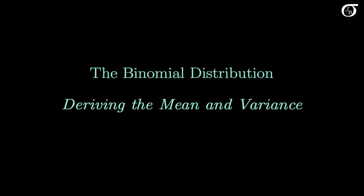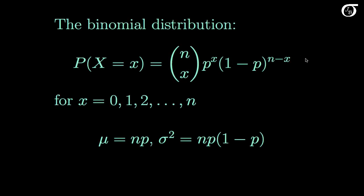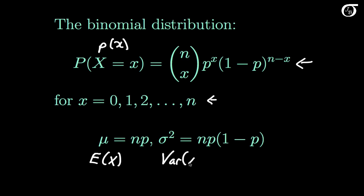Let's derive the mean and variance of the binomial distribution. Here's the probability mass function for the binomial distribution, and I sometimes take a bit of a shortcut and write this as p. A binomial random variable can take on whole number values between 0 and n. The mean is n times p, and the variance is n times p times (1-p). In this video I'm going to mathematically derive that mean and that variance in two ways: the easy way and the hard way.